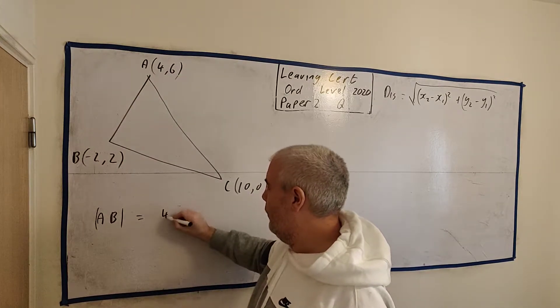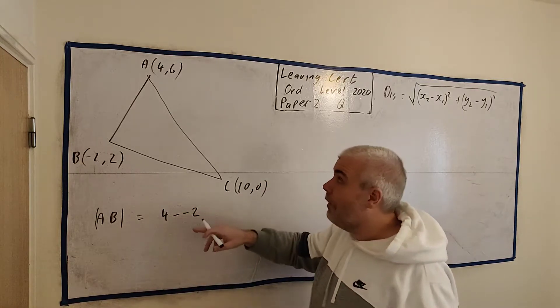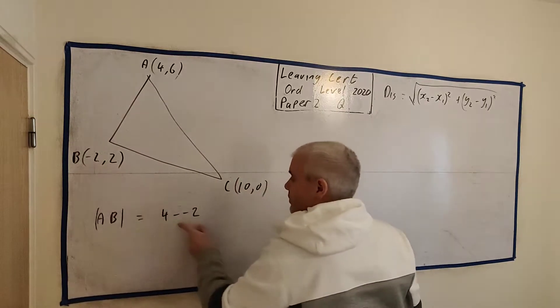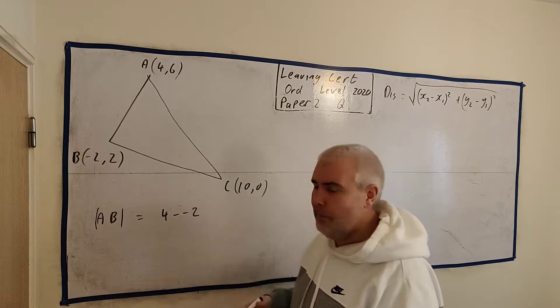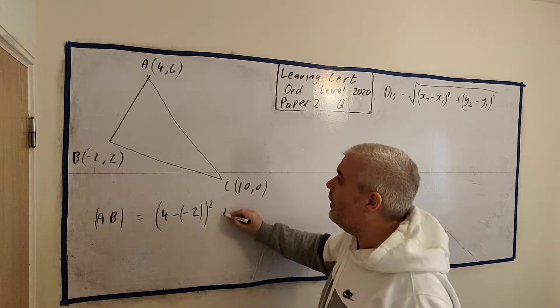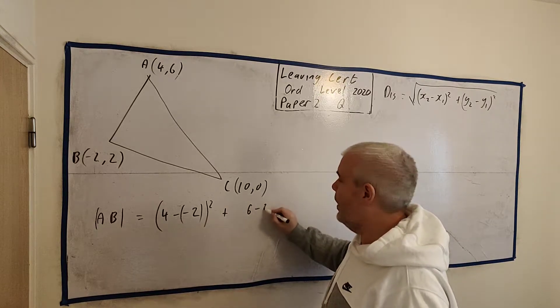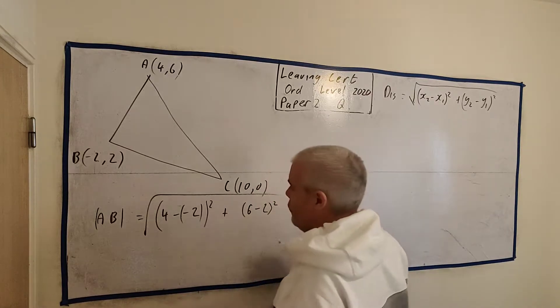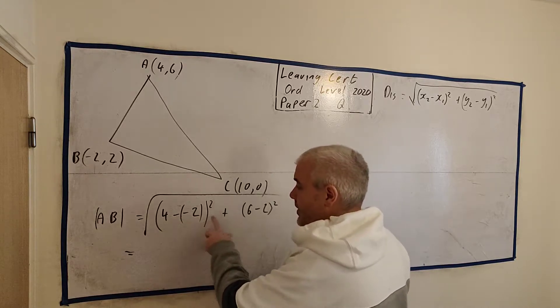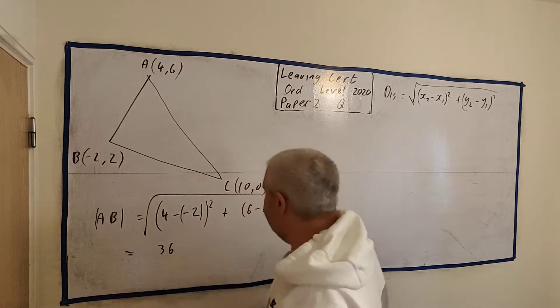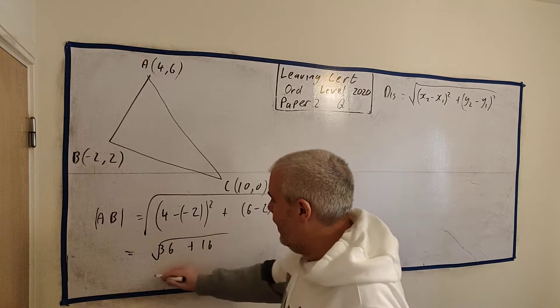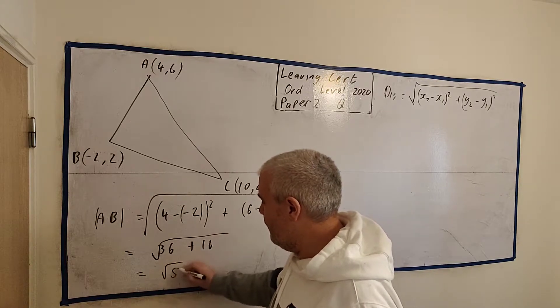So, 4 minus -4, this is the bit students mess up, there's two minuses, 4 minus minus, there's this minus and this minus. Better put bold them in, you don't have to write bold them, but you do need to change it to a plus. I like to put them in like this. That's squared, and then we have 6 - 2, that's squared, and we have a square root over this. This is 4 + 2, 6, 6 squared is 36, 6 - 2 is 4, 4 squared is 16, and this is equal to the square root of 52.